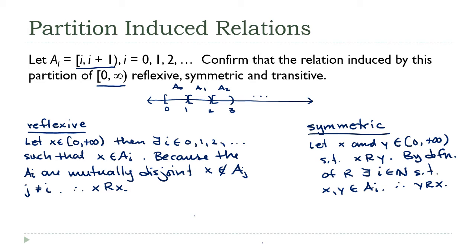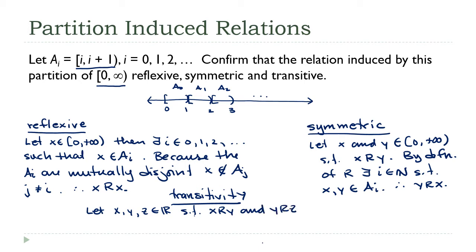Now for transitivity — this is the trickiest one. Let x, y, and z be positive real numbers such that x is related to y and y is related to z. By definition, there exists an i such that x and y are in a sub i. But how do we know z is in a sub i? Maybe z is in another one — say y and z are in a sub j. So I need to show that i and j are in fact the same.